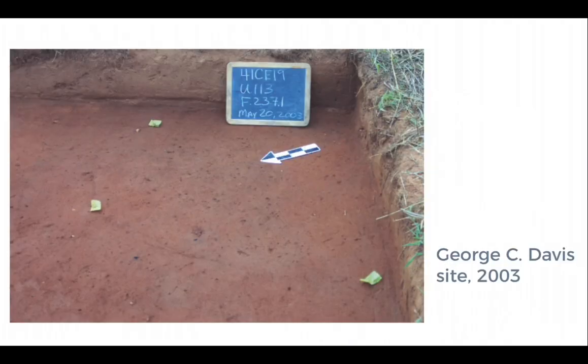This is an example of a site photograph. This is taken at the George C. Davis site in Texas in 2003, and it gives you a general idea of what was an archaeological context or a feature. It looks like feature 237.1.